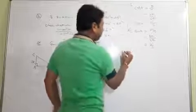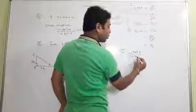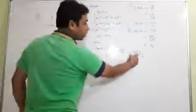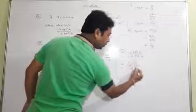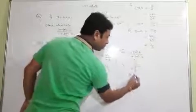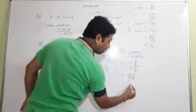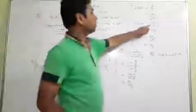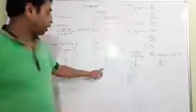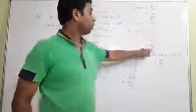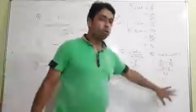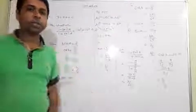Now take left hand side: 1 minus tan squared A upon 1 plus tan squared A. Tan A is 3 by 4, so tan squared A is 9 by 16. LHS becomes 1 minus 9 by 16 upon 1 plus 9 by 16, taking LCM: 16 minus 9 upon 16 plus 9, which is 7 upon 25. For RHS: cos squared A minus sin squared A is 16 by 25 minus 9 by 25, which is 7 upon 25. Both LHS and RHS are equal, so the answer is true.